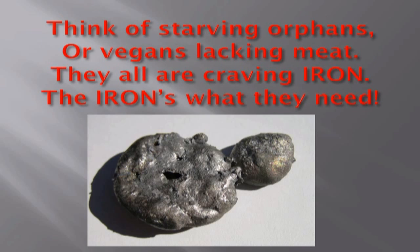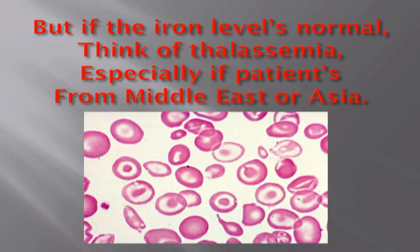Think of starving orphans or vegans lacking meat — they all are craving iron, and iron is what they need. But if the iron level's normal, think of thalassemia.